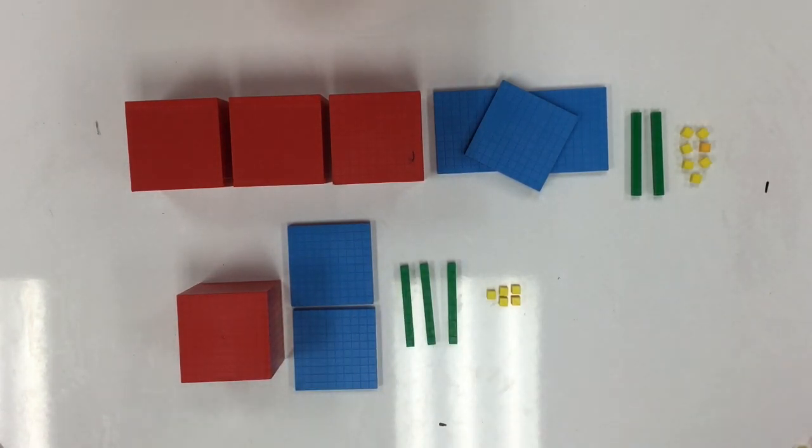You can see that we've made these in a concrete way because we've used the deans. When you use the deans, you can count the value of each of the numbers easily. So how do we know which one has the greatest value?